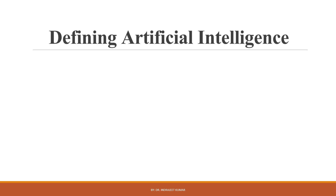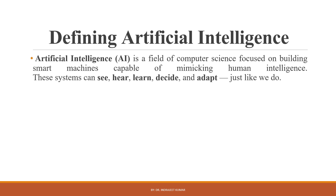Let's begin with the basic definition of Artificial Intelligence. Artificial Intelligence, or AI, refers to machines that can perform tasks that typically require human intelligence, like learning, reasoning, problem solving, understanding language, or even recognizing images and speech. It is a field of computer science focused on building smart machines capable of mimicking human intelligence.